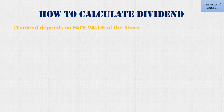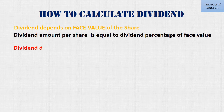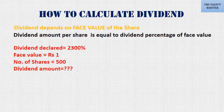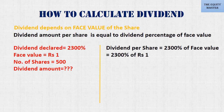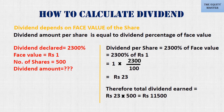Dividend depends on the face value of the share. Dividend amount per share is equal to dividend percentage of face value. For example, let dividend declared by the company be 2300%, where the company's face value is 1 rupee and you hold 500 shares. Dividend per share equals 2300% of 1 rupee, which is 23 rupees per share. Therefore, total dividend earned equals 23 multiplied by 500, which is 11,500 rupees.